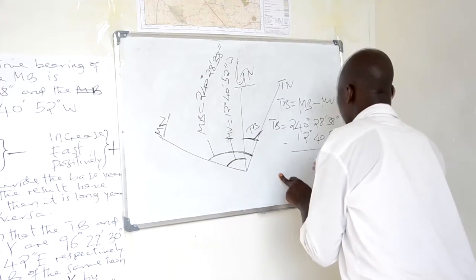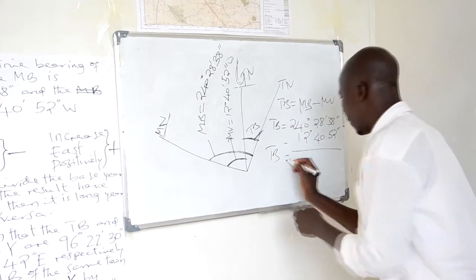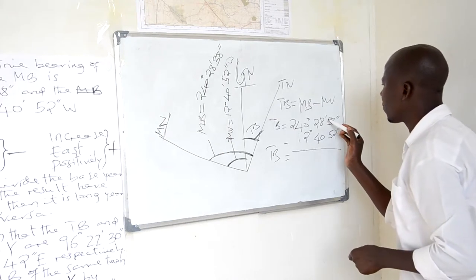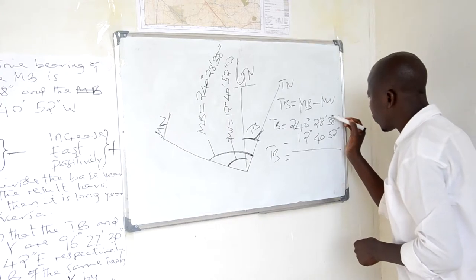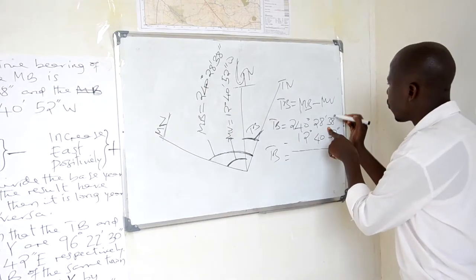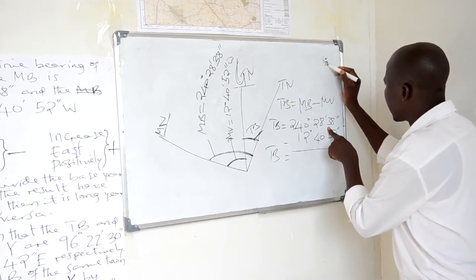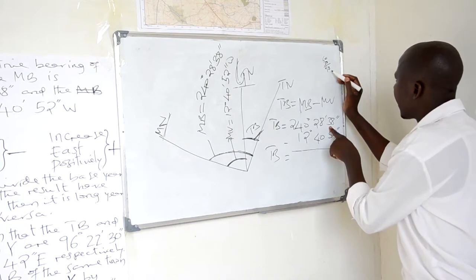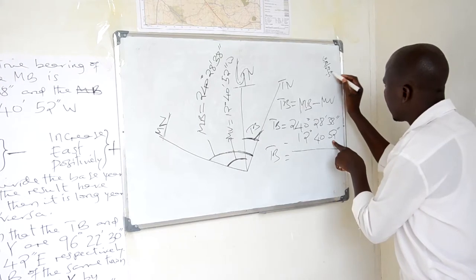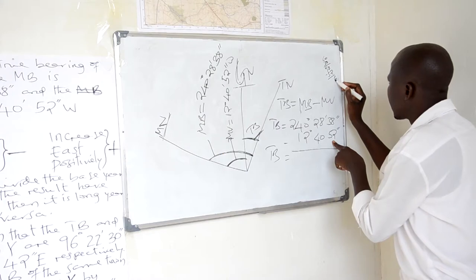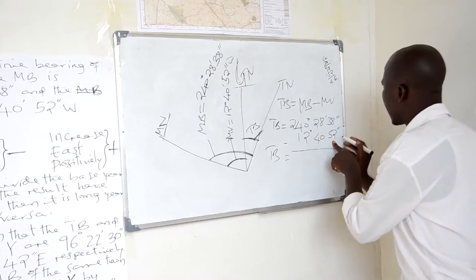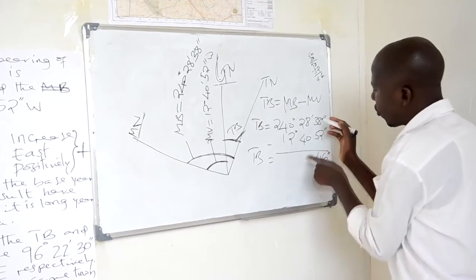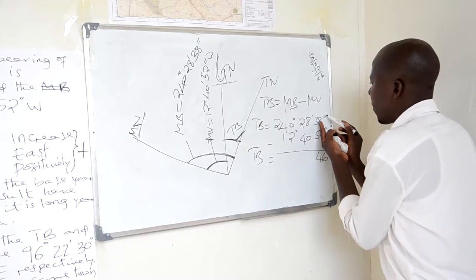To obtain true bearing, you start with seconds: 38 minus 52 is impossible, so you borrow one minute, which equals 60 seconds. Adding 60 to 38 gives 98. Then 98 minus 52 leaves 46 seconds. Because one minute was borrowed, the minutes column becomes 27. Then 27 minutes minus 40 minutes is also impossible, so you borrow one degree, which equals 60 minutes. Adding 60 to 27 gives 87. Then 87 minus 40 leaves 47 minutes.